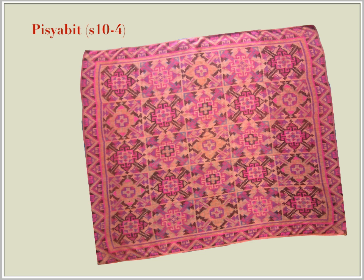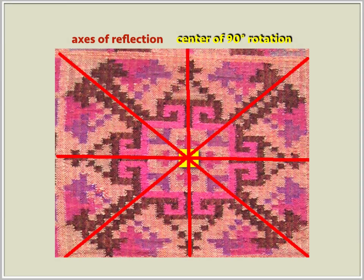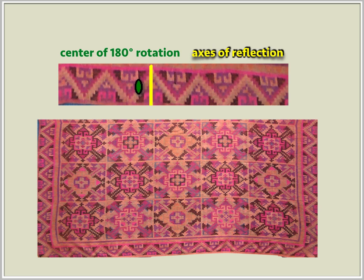An essential feature in the Pishabit is a basic geometric figure, namely the square. In this particular Pishabit, the center design is divided into 25 square sections showing four different motifs. There is a 90-degree rotation at the center of the design, and a horizontal and vertical reflection with axes passing through the center. The strip patterns surrounding the center and decorating the edges of the Pishabit possess a glide reflection and alternating vertical reflections and 180-degree rotational symmetries.